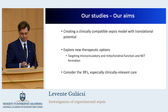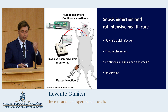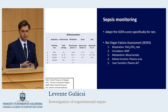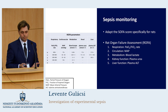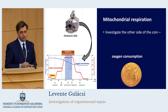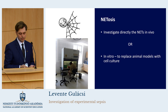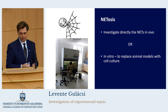We have created a sepsis model which is a polymicrobial infection, where we use administered fluid replacement, analgesia, and anesthesia on respirated animals. While monitoring the animals, we adapted the clinical elements of a scoring system specifically for rats, called the Rat Organ Failure Assessment parameters, which consists of respiration, circulation, metabolism, kidney, and liver function monitoring. For the microcirculation, we investigate with the IDF technique — one side of the coin for oxygen delivery. The other side is investigating mitochondrial respiration to get oxygen consumption. NETosis, as I mentioned, is like a spider web — we can investigate it directly with fluorescence microscopy in vivo, or we can replace the animal models with cell cultures.